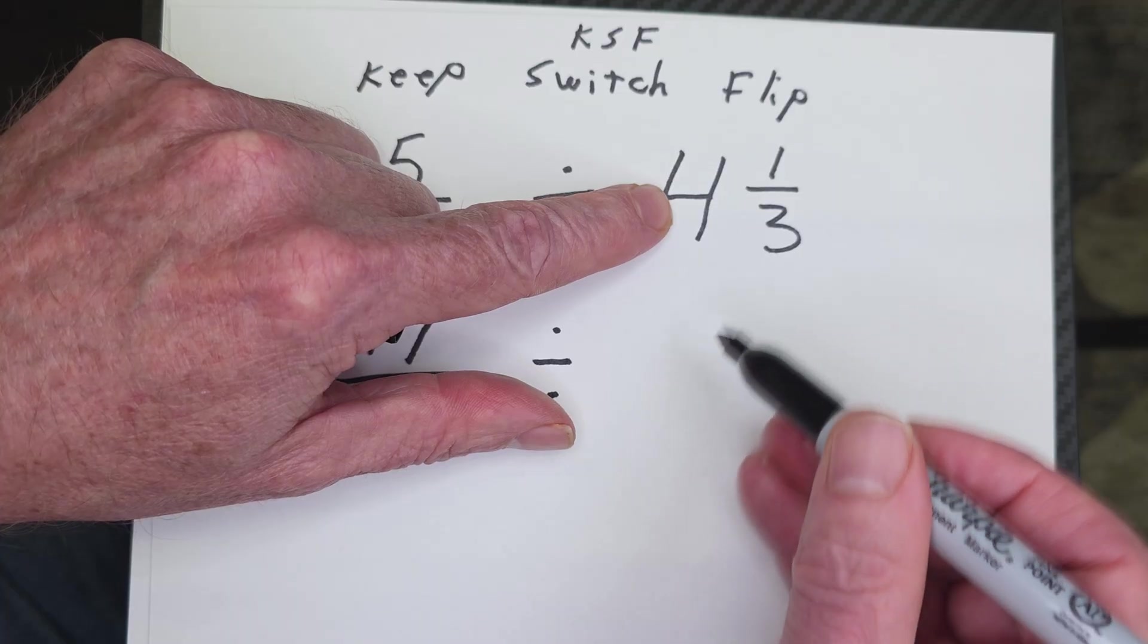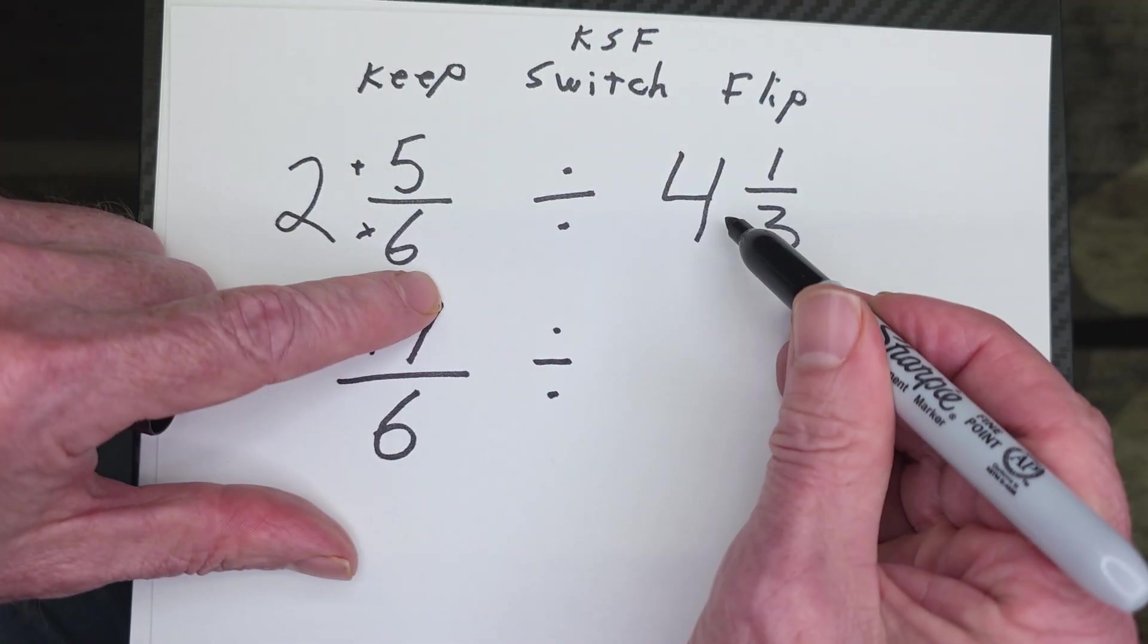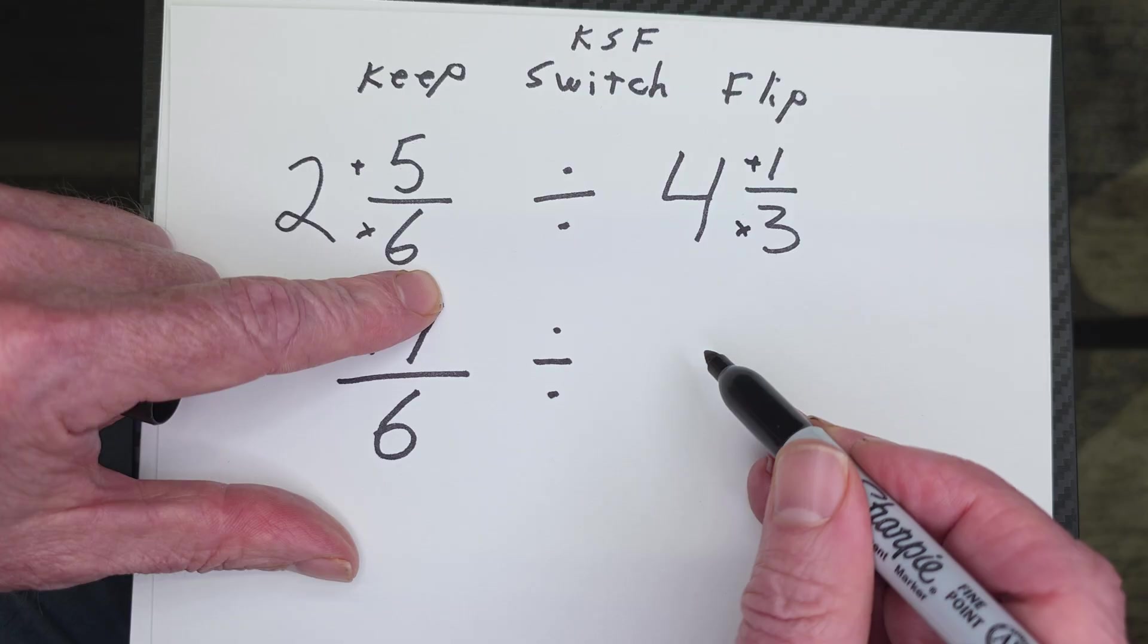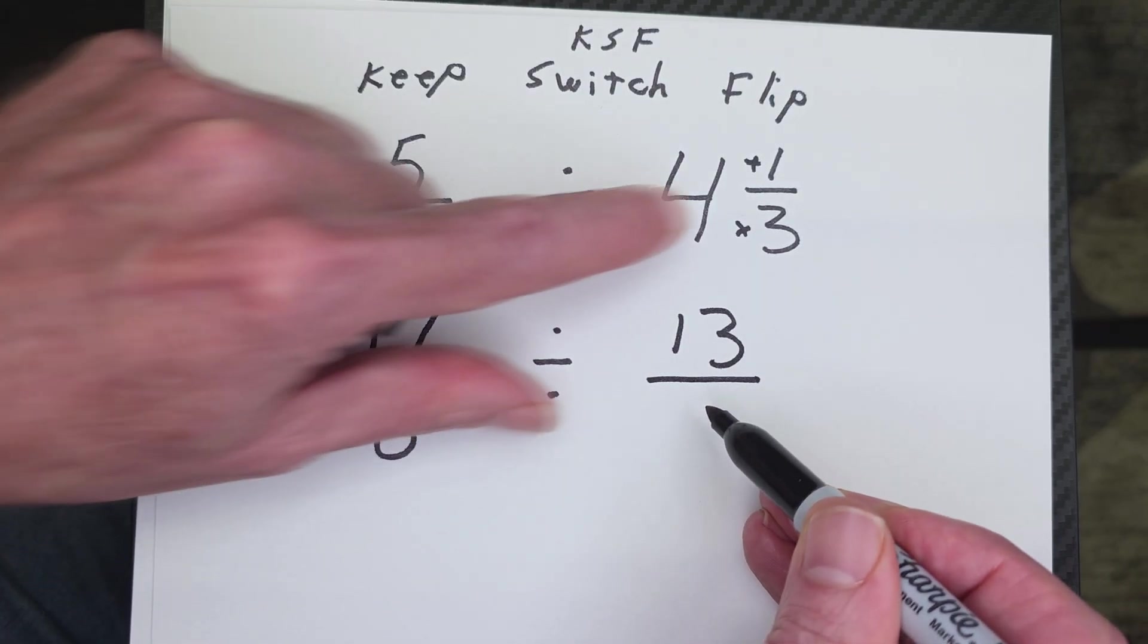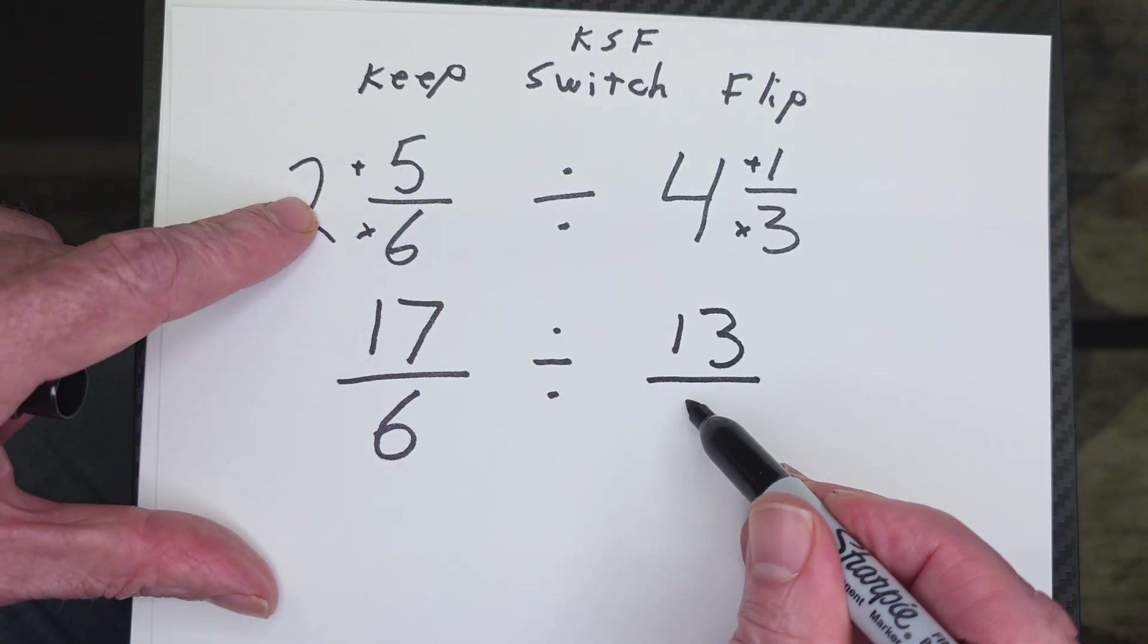And you're going to go ahead and do the same thing. 3 times 4 is 12 plus the 1 is 13. So we put 13 right here over the same denominator of 3.